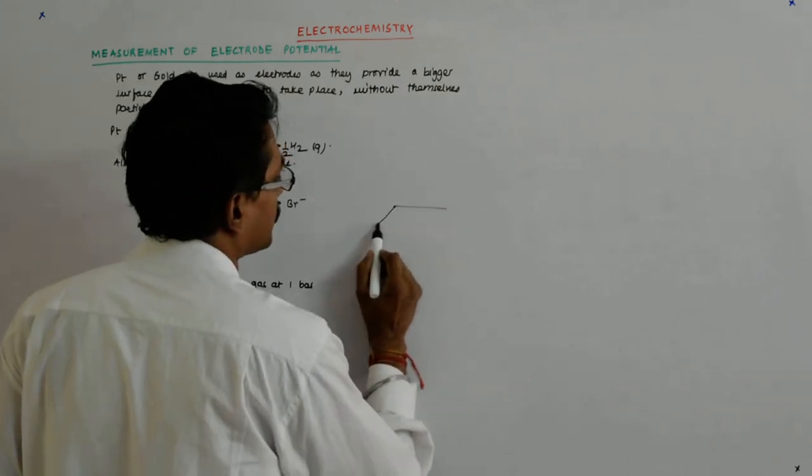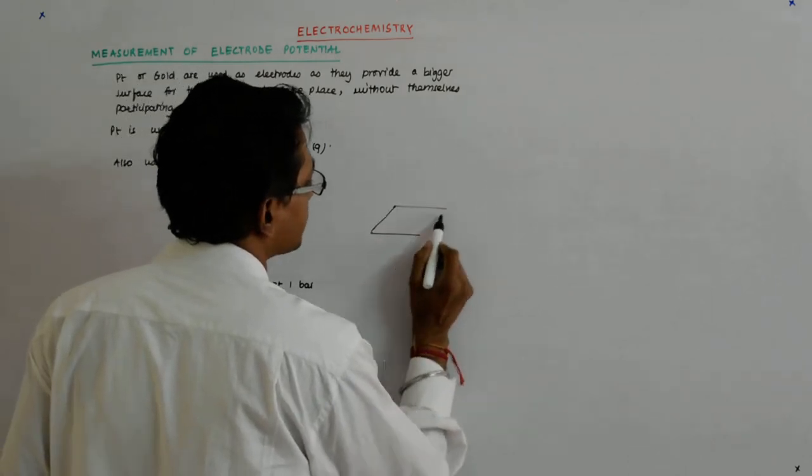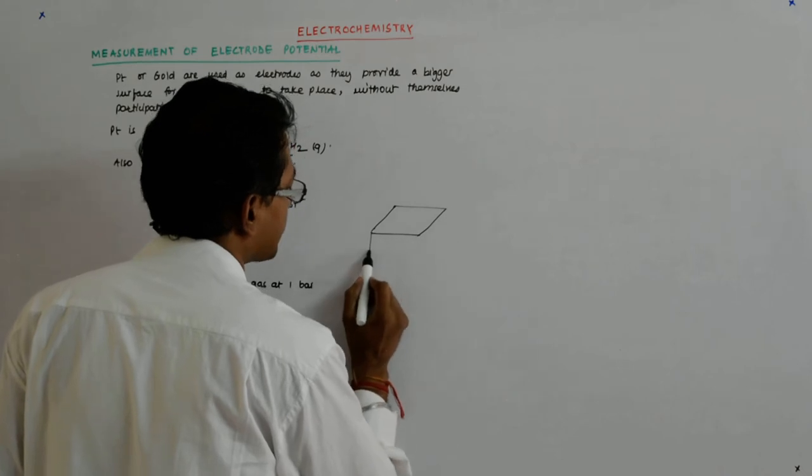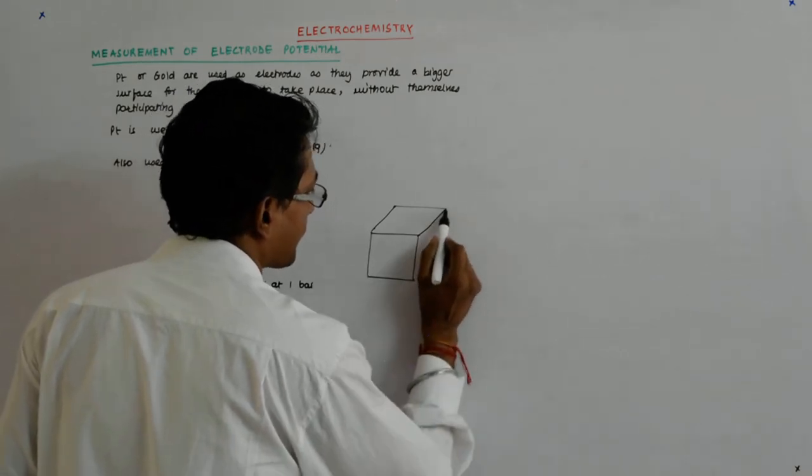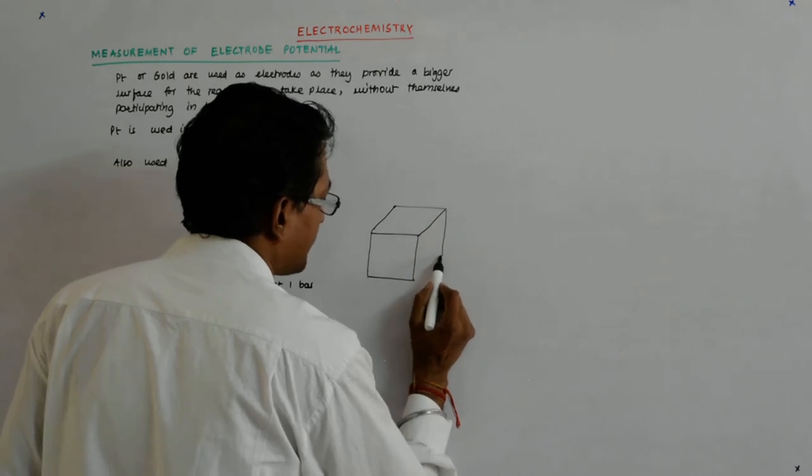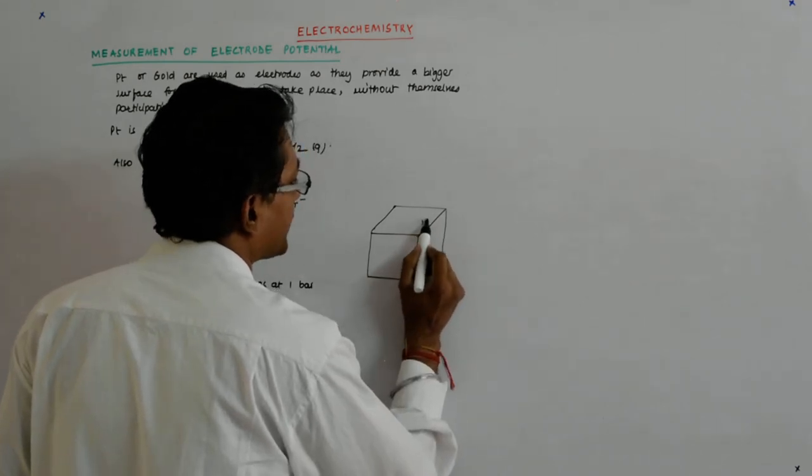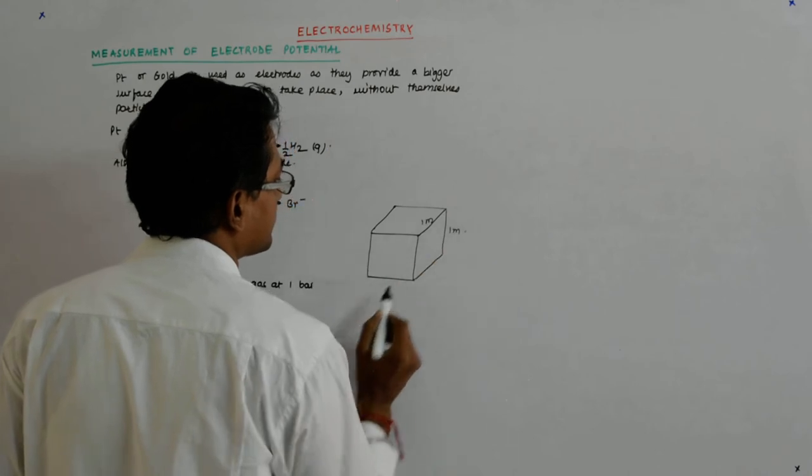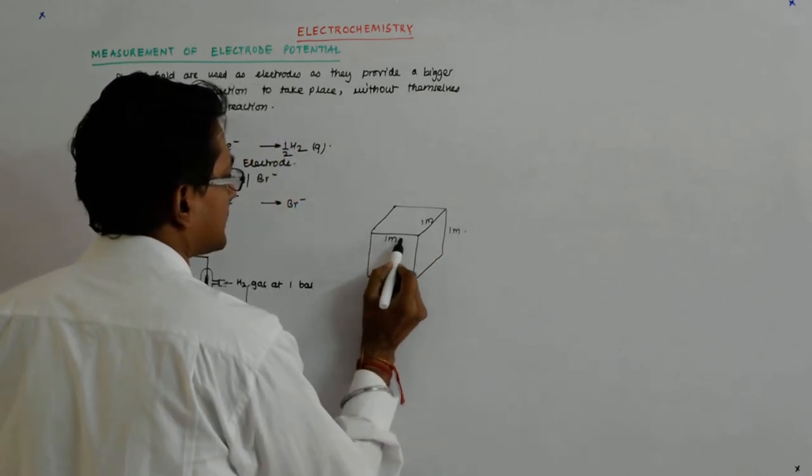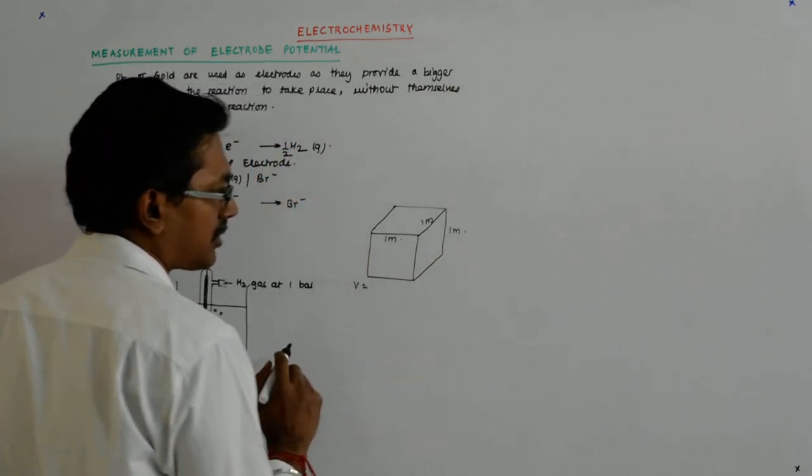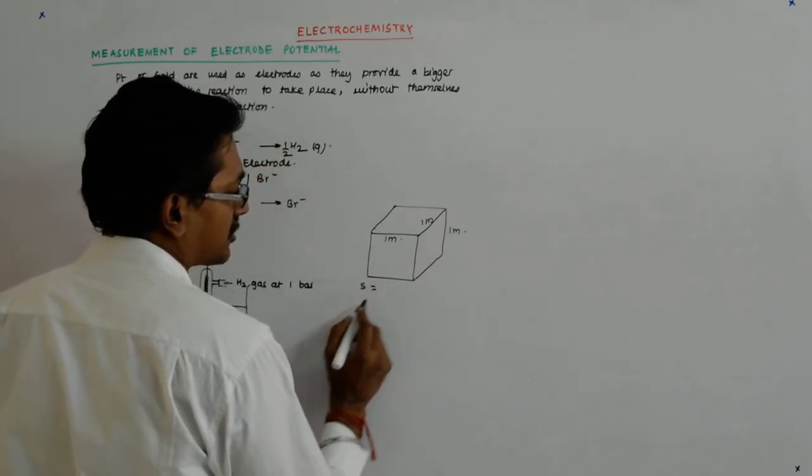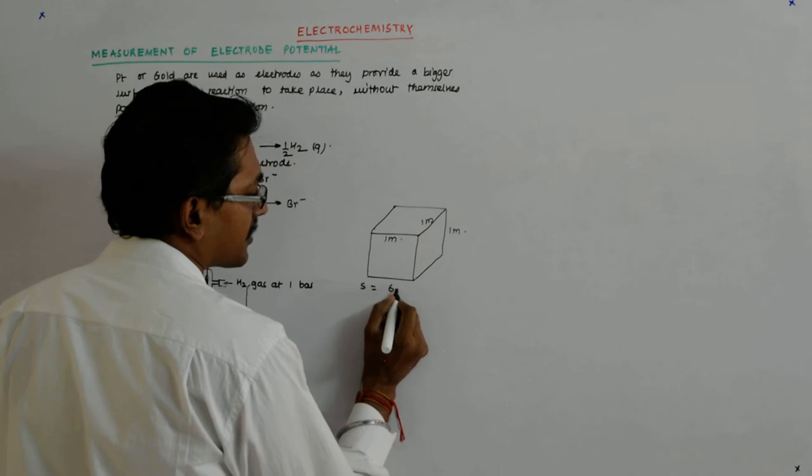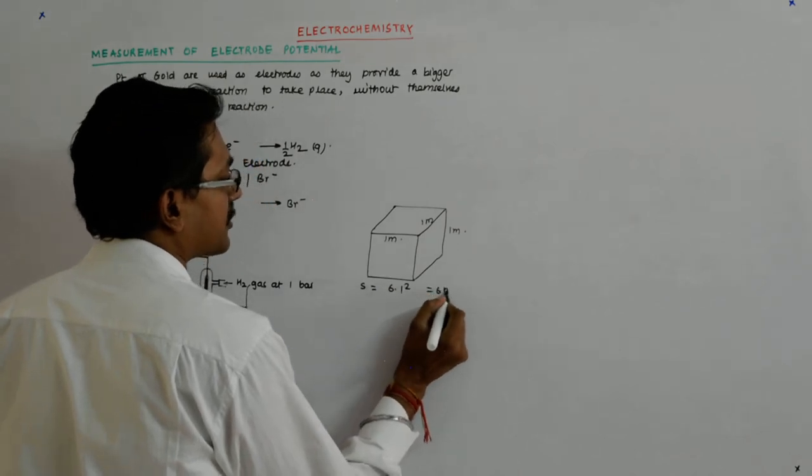For example, if you have a cube with each side as one meter, then the surface area of the cube is 6 into 1 square which is 6 meter square.